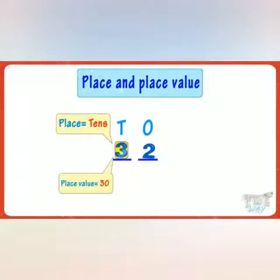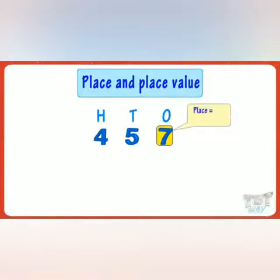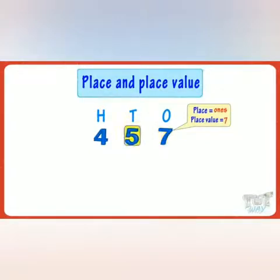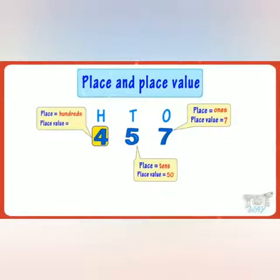Let's learn the concept with more examples. We have the number four hundred and fifty-seven. The place of seven is the ones place, and its place value is seven ones, that is seven. The place of five is the tens place, and its place value is five tens, that is fifty. The place of four is the hundreds place.